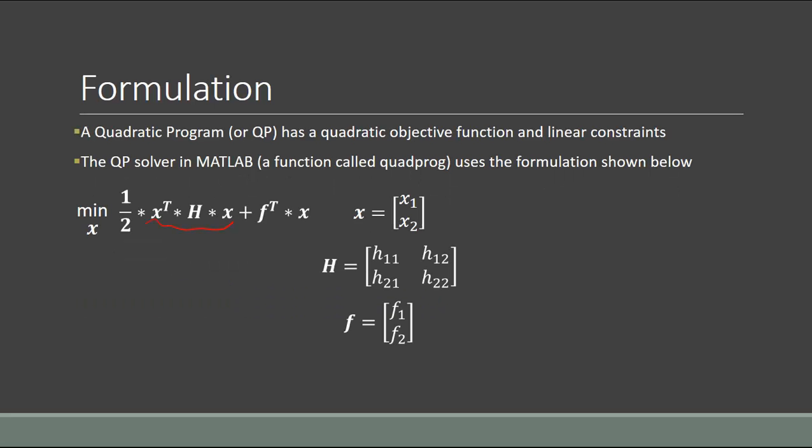The one-half is a nuance of the solver, so we need to be very careful with it. When formulating the problem, we must ensure the scalar version of the objective function corresponds exactly to the matrix version. This will be much more clear once we actually define a problem and solve it.